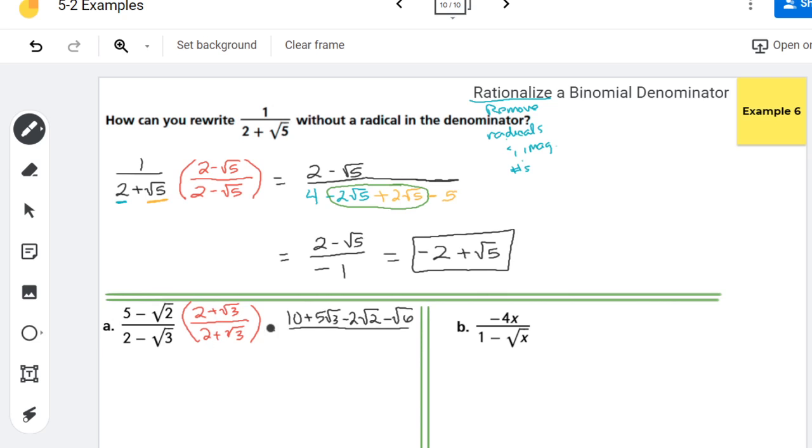Down below, 2 times 2 is 4. And 2 times root 3 is 2 root 3. Negative root 3 times 2 is negative 2 root 3. And negative root 3 times root 3 is negative 3.